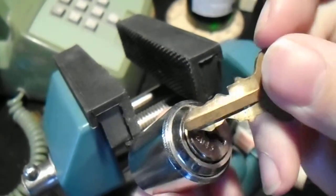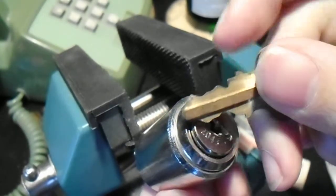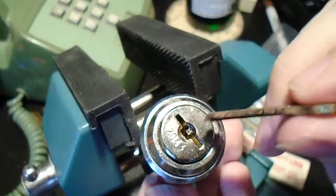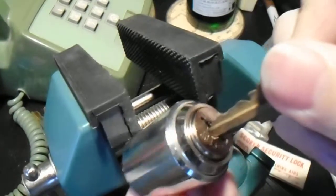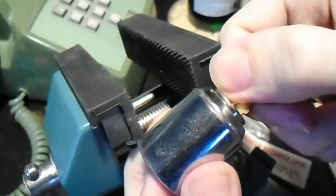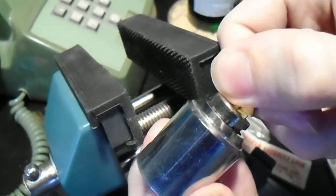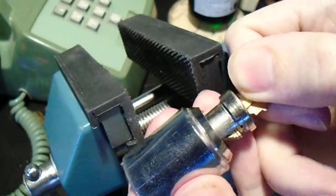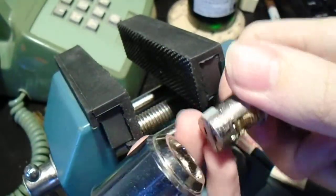This is a true double-sided wafer lock, where each side has a different bidding, and so the key really only fits in one way. But when you do insert it, turn 90 degrees, and pull, and the entire core will come out.